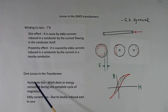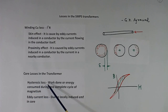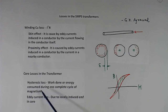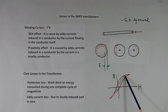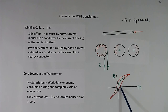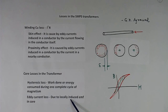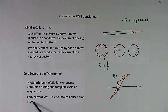Now core losses. There are two types of core losses: hysteresis loss and eddy current loss. Hysteresis loss is the work done or energy consumed during one complete cycle of magnetization — represented by the area inside the BH curve. Smaller the BH curve area, lesser will be the hysteresis losses. Second is eddy current loss: due to locally induced EMF in the core, eddy currents will flow in the core, causing losses.